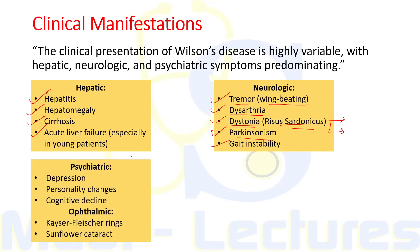Psychiatric features include depression, personality changes, and cognitive decline such as decline in school performance. Ophthalmic features include Kayser-Fleischer rings, which occur due to copper deposition into Descemet's membrane of the cornea, and a typical sunflower cataract. The KF ring deposits are golden-brown, starting on the superior limbus, forming a superior crescent, then an inferior crescent, and finally circumferential copper deposition in Descemet's membrane. After chelation therapy, this ring disappears.